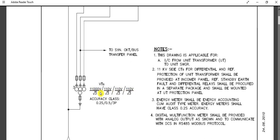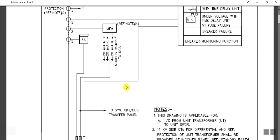This is an 11kV / 110V VT. The primary side is 11kV, since this is an 11kV feeder, and the secondary side outputs are 110/√3 volts. The VT has three accuracy classes: 0.2S, 0.5, and 3P. The 0.2S accuracy class winding is for the energy audit meter, the 0.5 accuracy class is for normal metering purposes, and the 3P accuracy class winding is connected to the numerical protection relay.